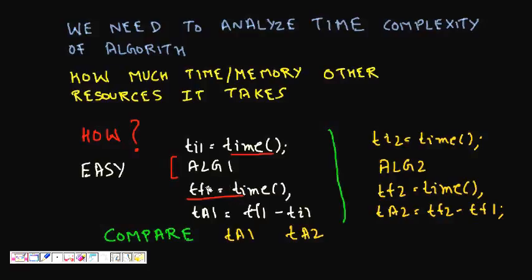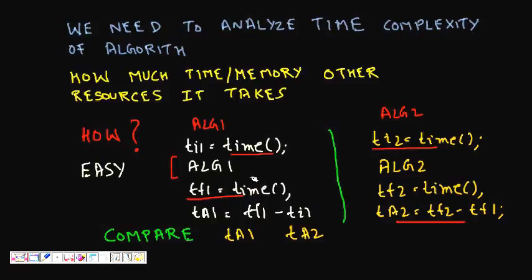If we have two algorithms — algorithm 1 and algorithm 2 — we can apply the same process: record the start time, run algorithm 2, find its finish time, and get the total time as tf2 minus ti2. That looks straightforward, but is there any problem with this approach?